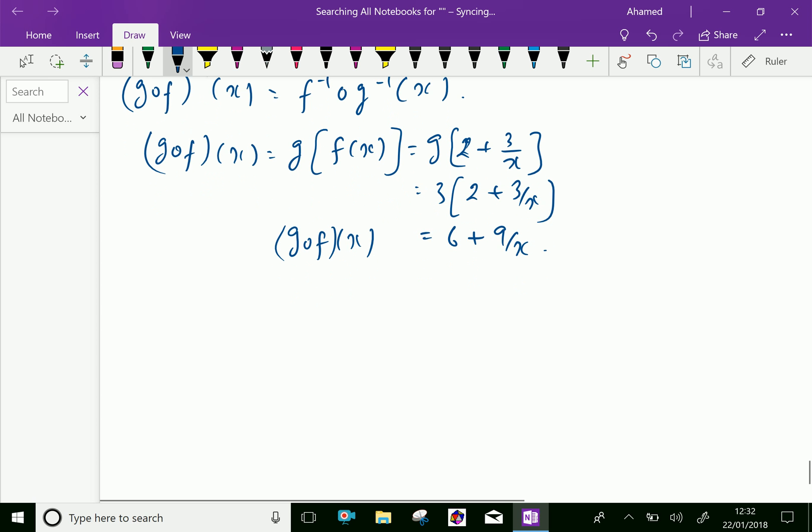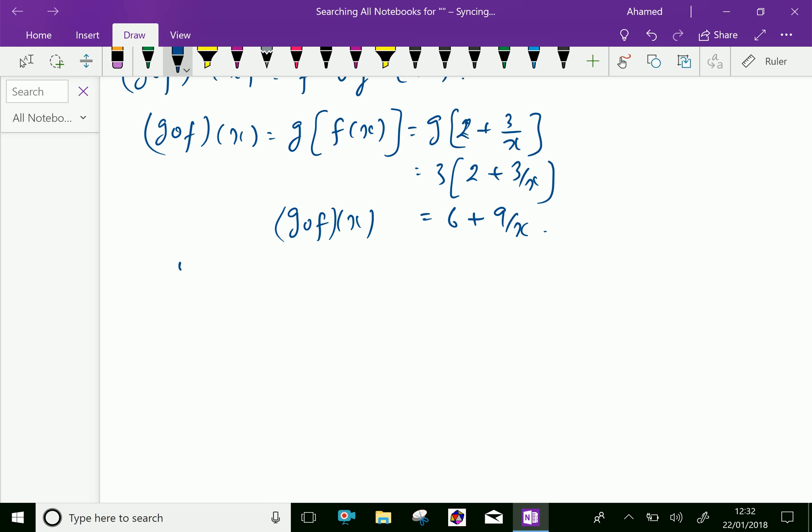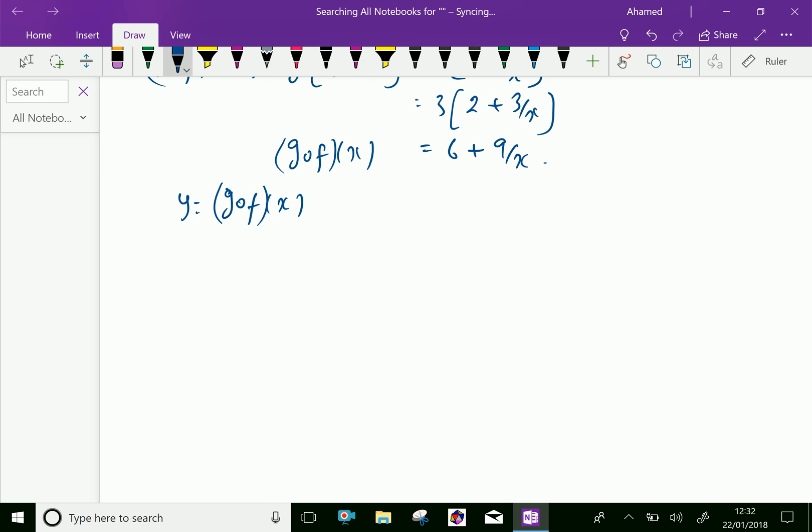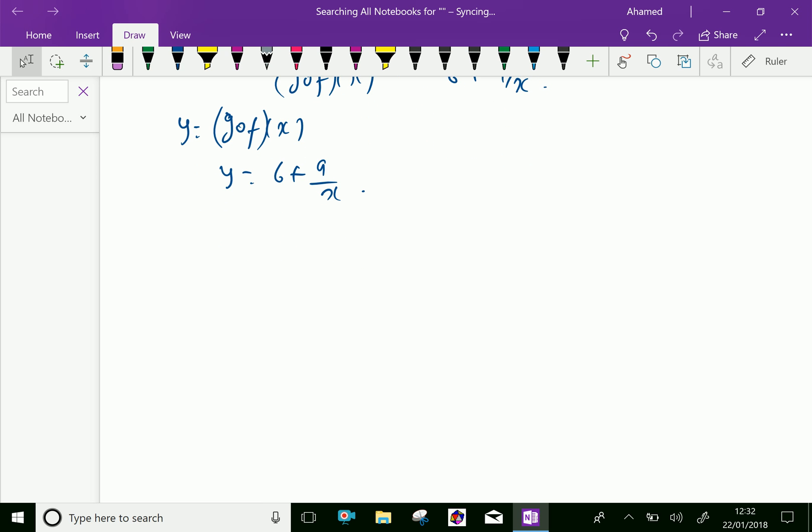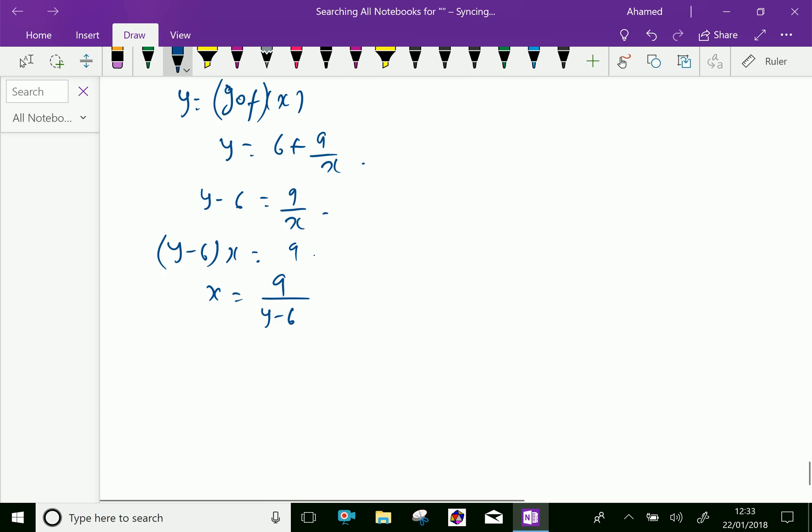Now we will find g of f inverse x. Let g of f x is y equal to g of f x. Therefore, we can write y equal 6 plus 9 over x. Get x in terms of y, means y minus 6 equal 9 over x. By cross multiplying, y minus 6 into x equal to 9.